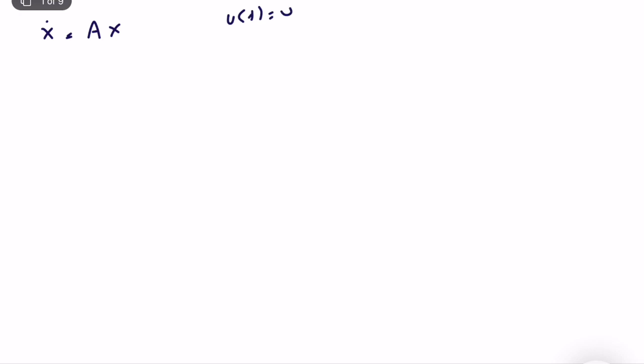Let's start with an autonomous system — let's just forget the input for now and assume u(t) is equal to zero. This is the state-space representation. If we take the Laplace transform of both sides, we get sX(s) minus x₀, because we have an initial condition, and that is equal to A times X(s).